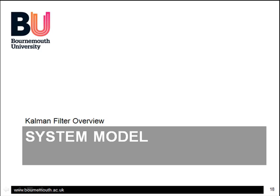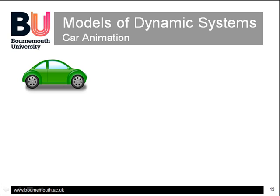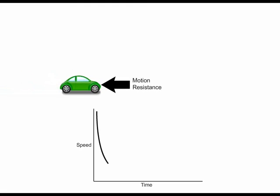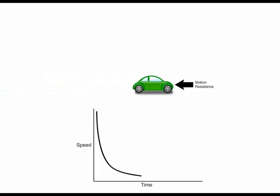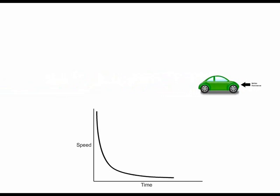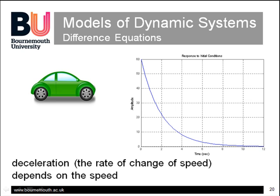Now we can look at a model of how dynamic systems like cars and aircraft actually move. This model usually takes the form of difference equations — a sampled form of differential equations. A common property of many dynamic systems is that the rate at which things change depends in some way on how big they are. For example, the faster a vehicle moves, the more frictional and air-resistant forces it has to overcome. If the engine stops, the initial loss of speed will be high, but as the vehicle slows down, the losses become less and the rate of deceleration — or rate of change of speed — depends upon the speed.